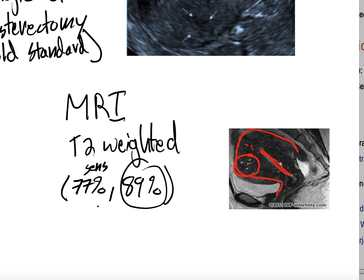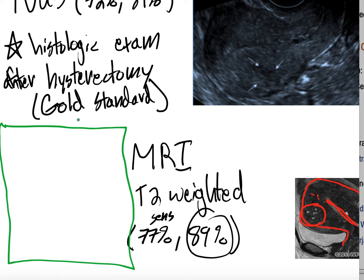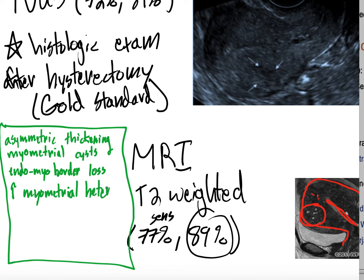In both imaging modalities, you're looking for: asymmetric thickening of the myometrium, which makes sense since endometrium is growing and hypertrophying inside it; myometrial cysts — those dark areas on ultrasound; loss of the clear endometrial-myometrial border, since the two tissues are mixing; and increased myometrial heterogeneity, because the myometrium should look uniform but with endometrial tissue inside it becomes heterogeneous.